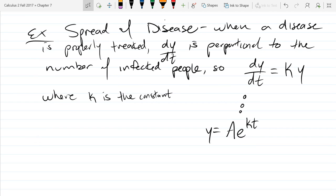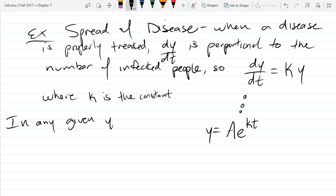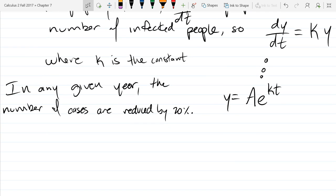So now we need some initial conditions. Here are the conditions: in any given year, the number of cases are reduced by 20 percent. And if there are 10,000 cases today, how long until 1,000?